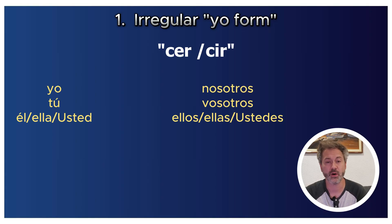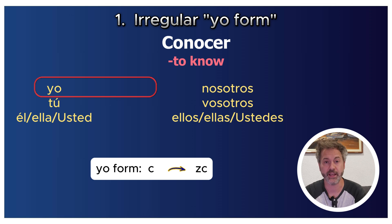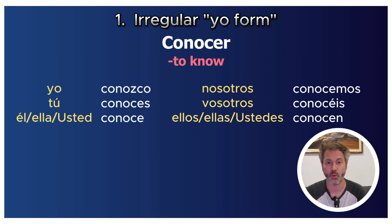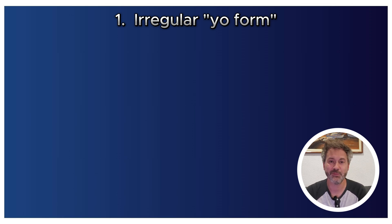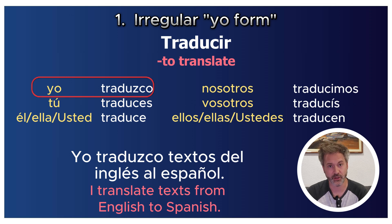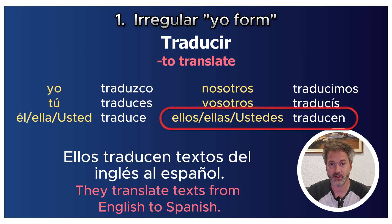The last pattern in this group: when a verb ends in -cer or -cir, the C changes to ZC in the yo form. With conocer, we get 'yo conozco' — 'Yo conozco a muchas personas en la ciudad' (I know a lot of people in the city) — while 'Nosotros conocemos a muchas personas en la ciudad' is regular. Traducir becomes 'yo traduzco' — 'Yo traduzco textos del inglés al español' (I translate texts from English to Spanish) — while 'Ellos traducen textos del inglés al español' is regular.